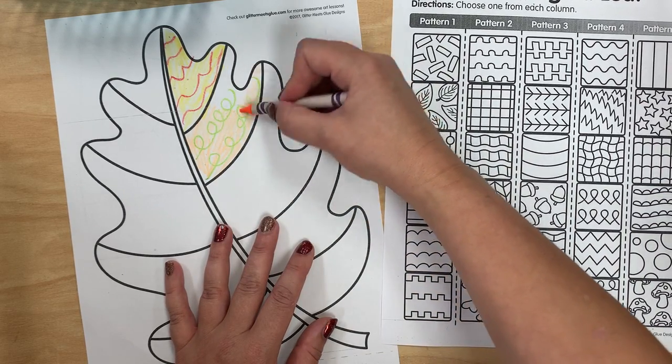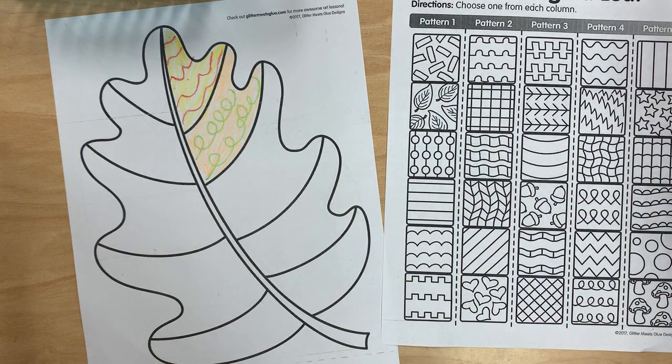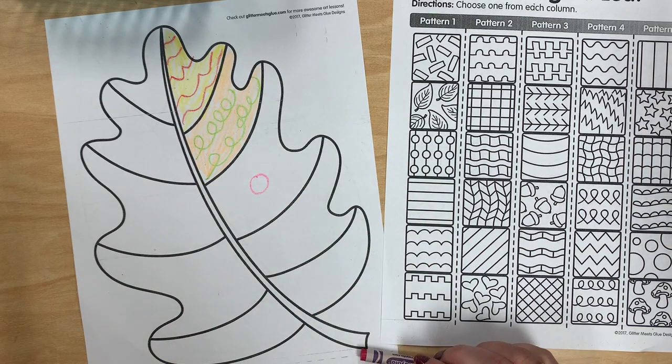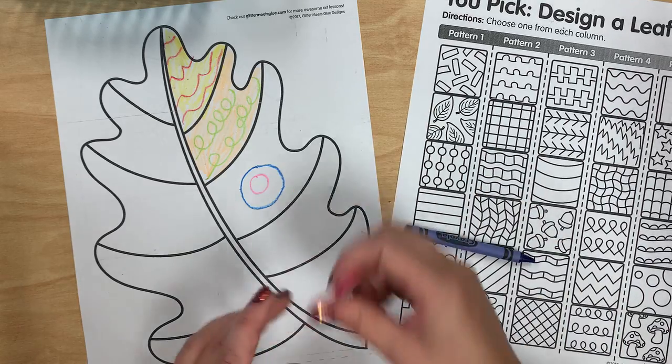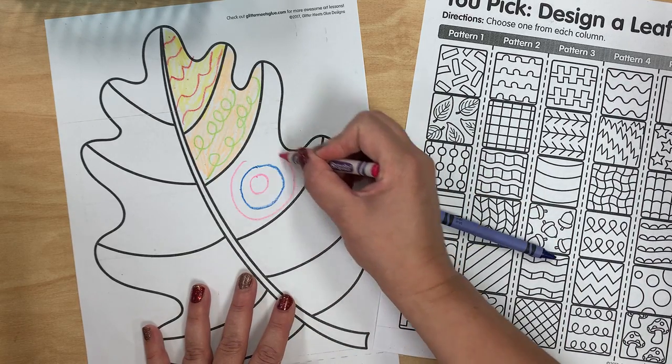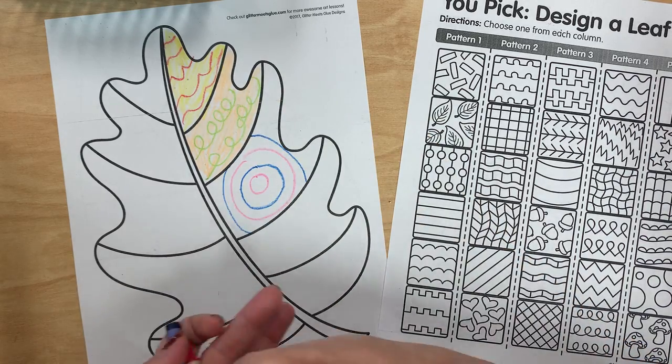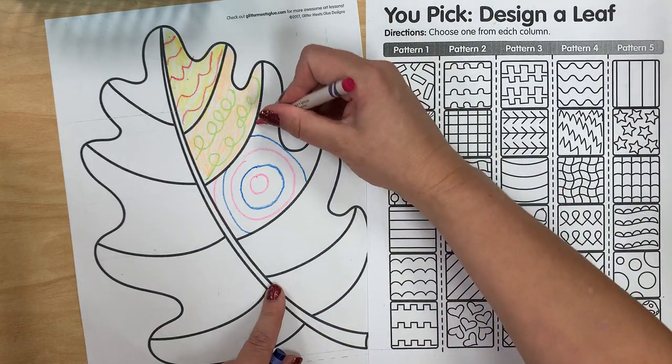Now you don't have to just use patterns from the paper. If you want to make up your own pattern you can. Like I'm gonna make up a bullseye pattern with blue circle, pink circle, blue. I'm just gonna keep filling up my shape with that pattern and that is not on this paper. I just made that up.